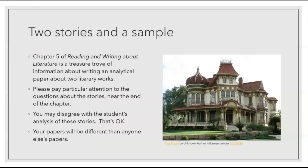In our chapter, we have two stories and a sample essay, so we have a treasure trove of information about writing an analytical paper about two literary works, which is coincidentally somewhat similar to your paper one writing assignment. Please pay particular attention to the questions about the stories near the end of the chapter — those could help you analyze your stories. And you may disagree with the students' analysis of these stories in our chapter, and that's okay. Your papers will be different than anyone else's papers.